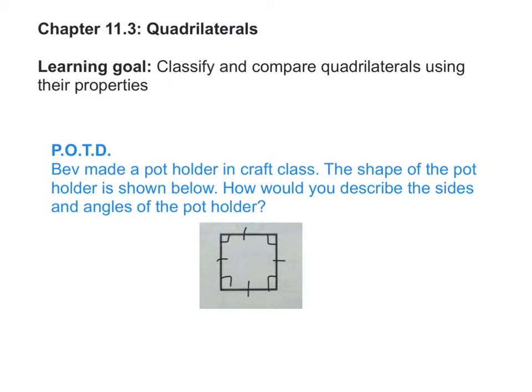What is a triangle? Siddharth? A triangle is a polygon with three sides. And today we're going to be talking about a quadrilateral, which is a polygon with? Four sides.